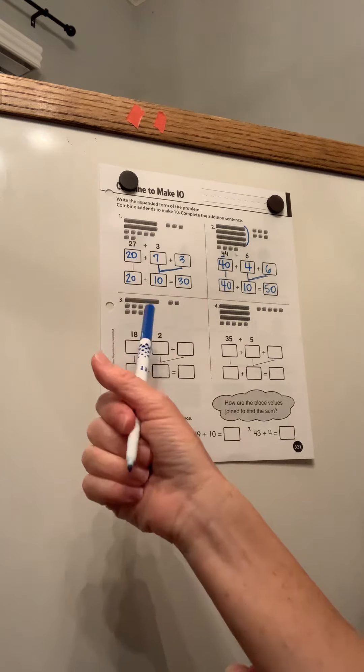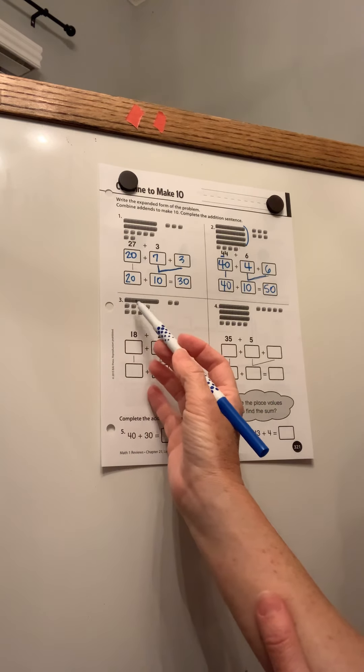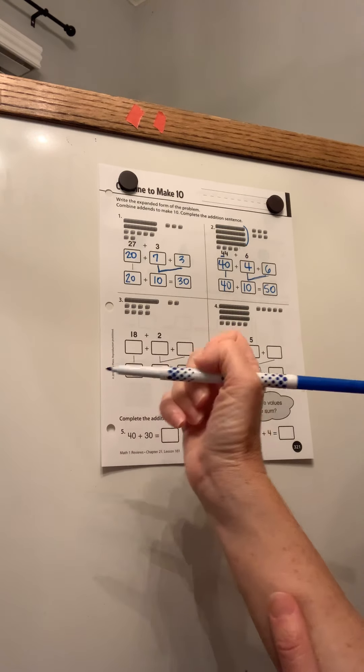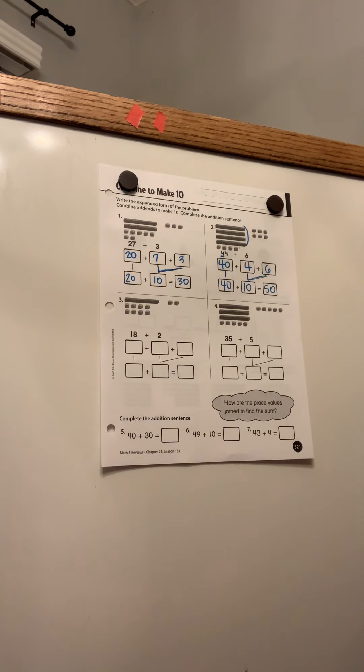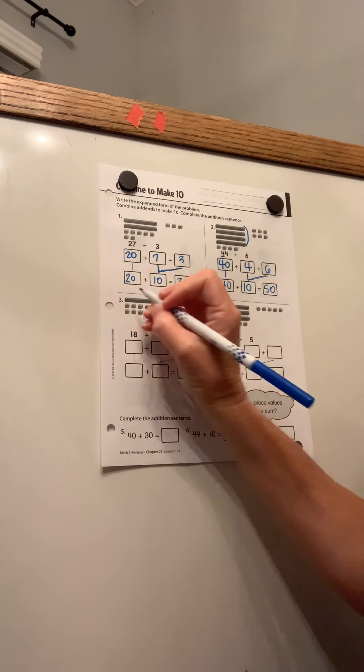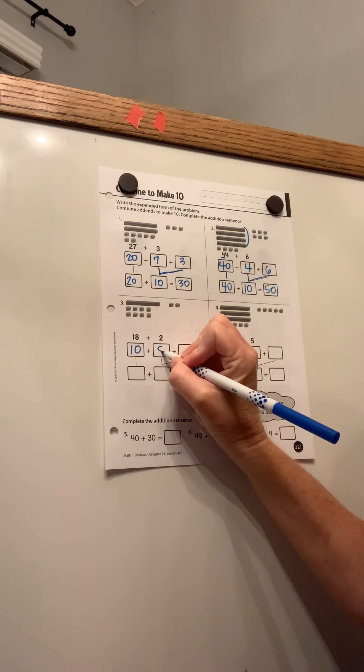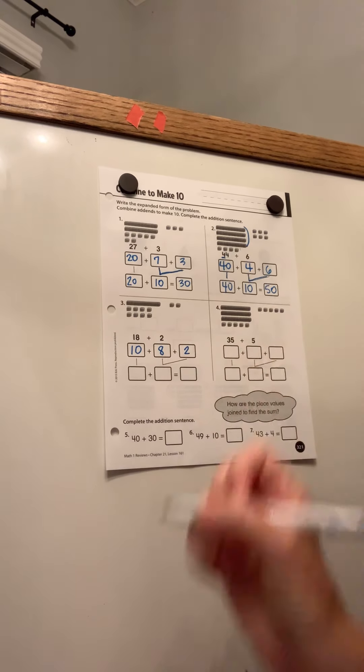Alright. Over here, we've got 18. So here's how they've shown us 18. We've got 10, 11, 12, 13, 14, 15, 16, 17, 18. And then we have plus two. Okay. We're going to break apart the 18 into tens and ones. So I have one 10. I have eight ones. So 10 plus eight would be 18. And then I'm just going to bring the two over.